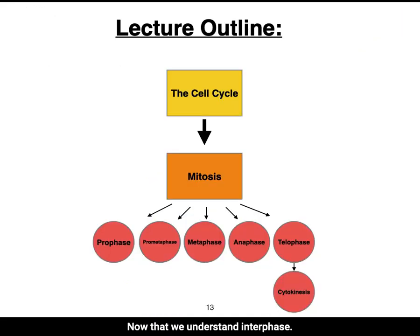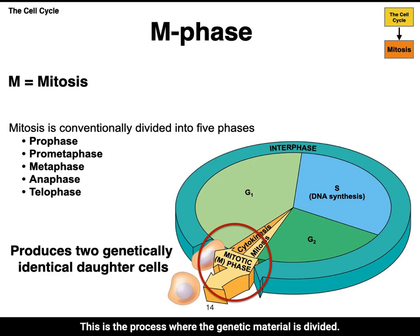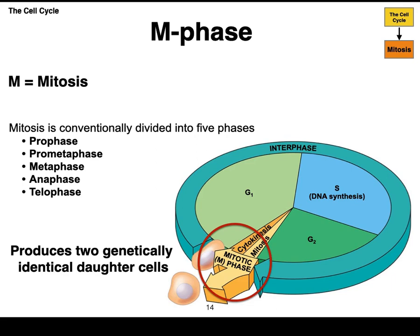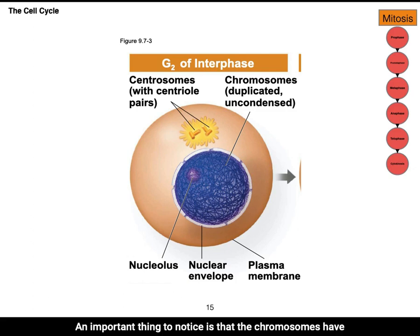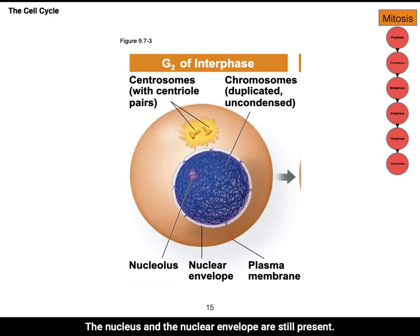Now that we understand interphase, let's look at mitosis and each of its phases. The M in the diagram stands for mitosis — the mitotic phase of the cell cycle — where genetic material is divided. This division takes place in five phases: prophase, prometaphase, metaphase, anaphase, and telophase. The end goal of mitosis is to produce two genetically identical daughter cells. Notably, when looking at G2 of interphase, the centrosomes are present with centriole pairs, and chromosomes are duplicated but not yet condensed — the nucleus and nuclear envelope are still present.